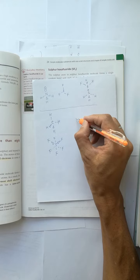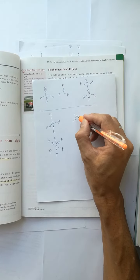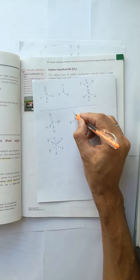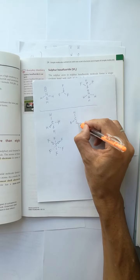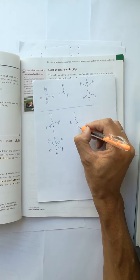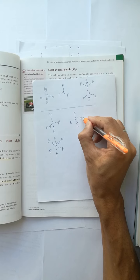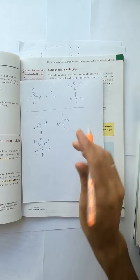Remember, for tetrahedral, we should have two bonds on the plane, and the other one is out of paper and the last one is behind the paper.